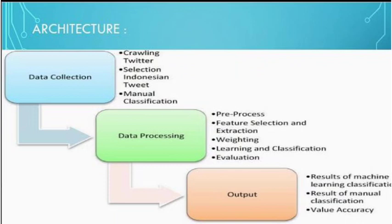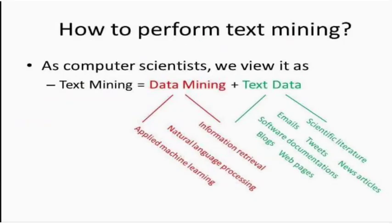Further steps in the text mining architecture include weighting, learning and classification, and evaluation. The outputs include results of machine learning classification, results of manual classification, and value accuracy.